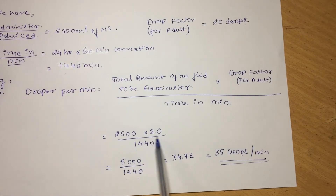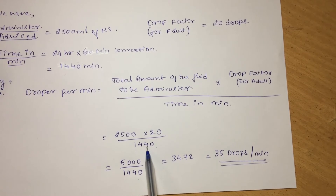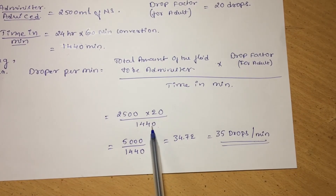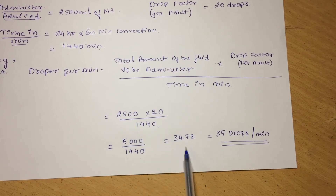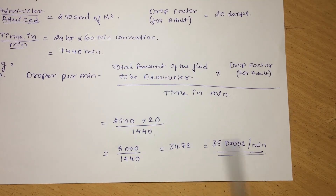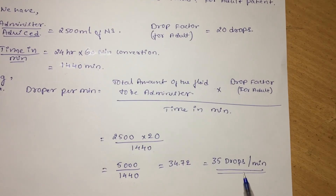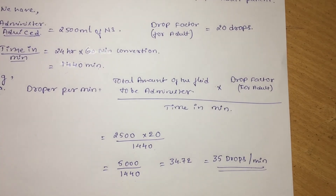For drops per hour, the substitution will be 2500 into 20, divided by 24 for hours. By simplifying that, you can get the drops per hour value. I hope this video will be helpful for you. Have a great time — bye bye.